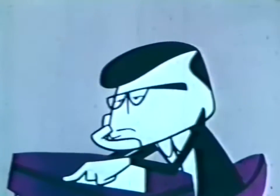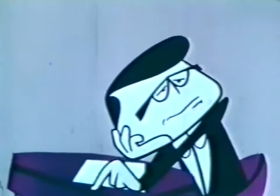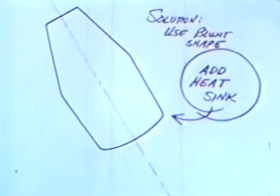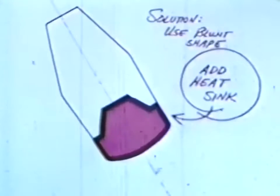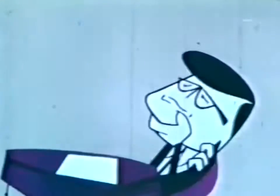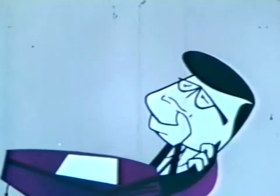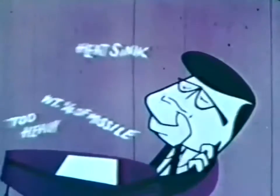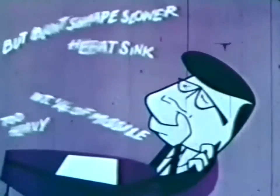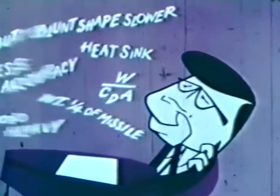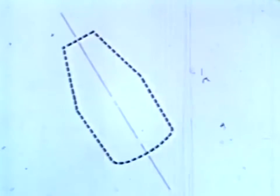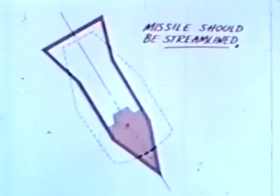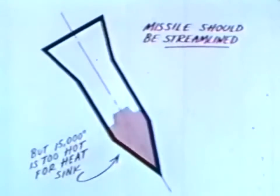To further reduce heating, Dr. Parameter must find other techniques in addition to the blunt shape. His first solution is the heat sink: use the blunt design and add a mass of heat-conducting metal large enough to absorb most of the heat generated during re-entry without melting before impact. It works, but he is not yet satisfied. The weight of the heat sink displaces more than one-fourth of the payload. Furthermore, the blunt design slows the missile, keeping it in the atmosphere a longer time, making it less accurate and easier to intercept.